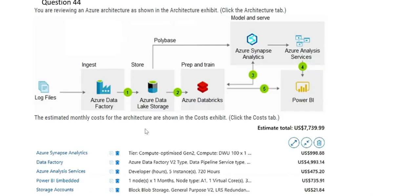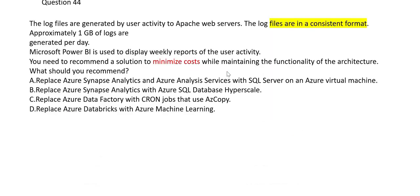Even before looking at the options, the most expensive service is Data Factory at $4,900. Since the log format is consistent, from the source to the Data Lake you can use AZ Copy instead of Data Factory — no transformation is needed. AZ Copy is a much cheaper option as it is just a copy operation. My answer is option C: replace Data Factory with cron jobs that use AZ Copy.